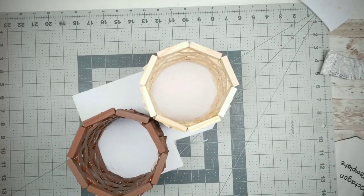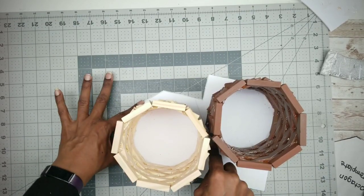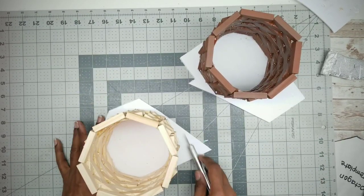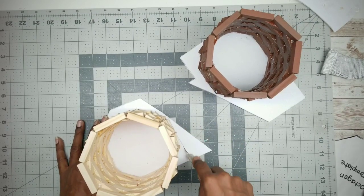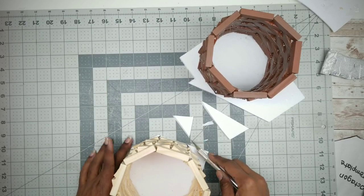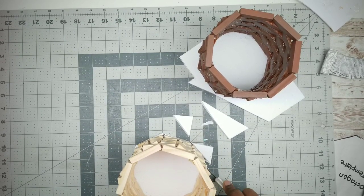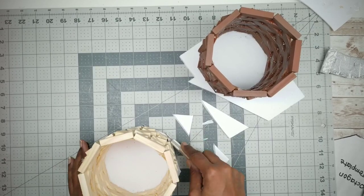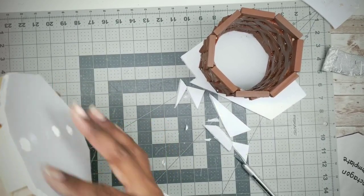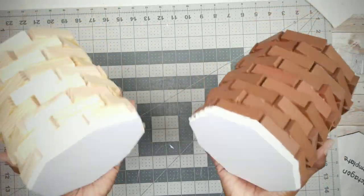Now I am going to go ahead and cut them apart and trim off that excess foam board using the shape of the vase as a guide. And here they are, cut out and ready to go.